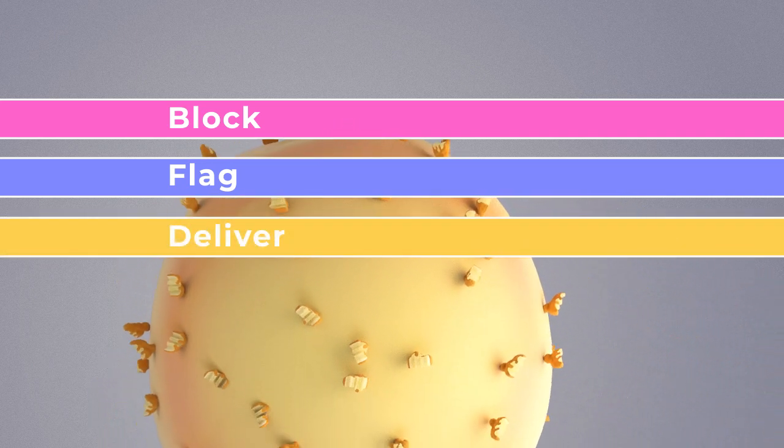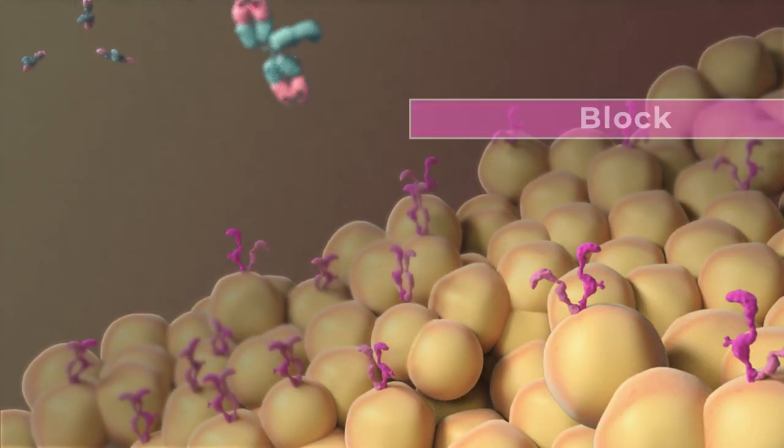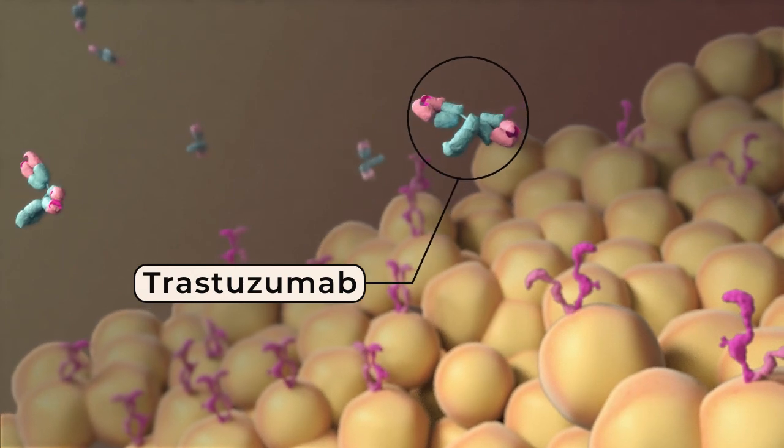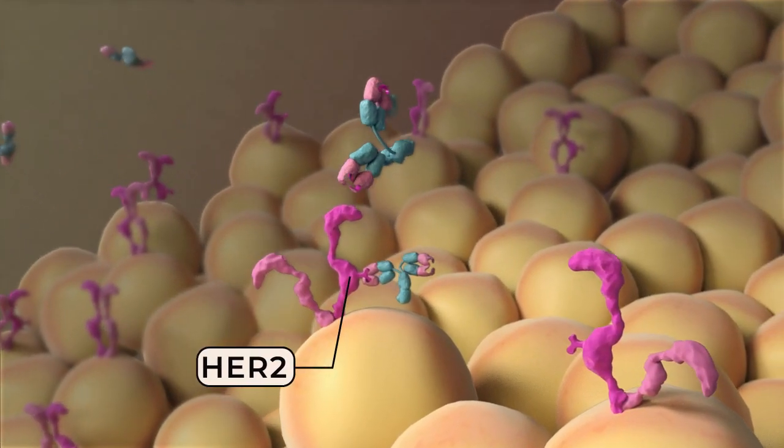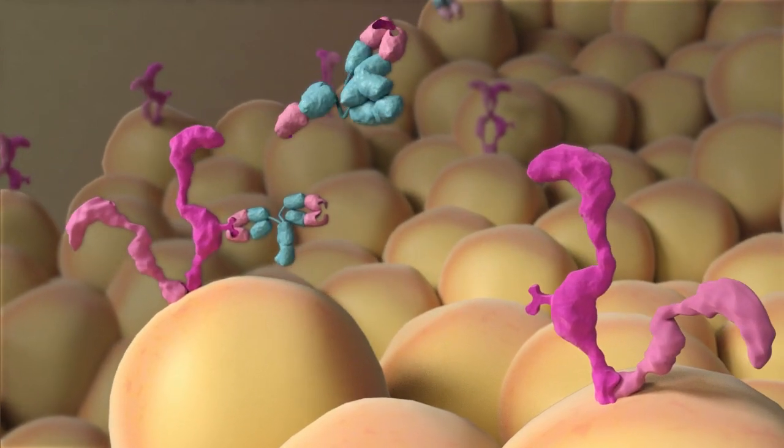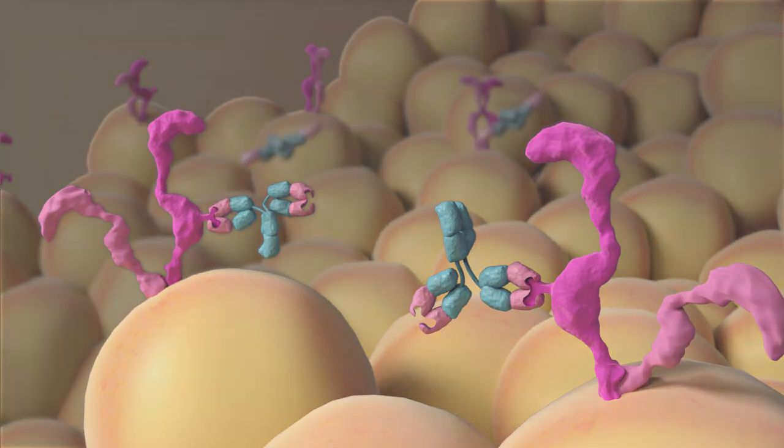This makes them a valuable type of targeted therapy for treating cancer. For example, a monoclonal antibody called trastuzumab attaches to a molecule called HER2 on the surface of some cancer cells. Blocking HER2 keeps it from sending signals the cancer cells need to grow.